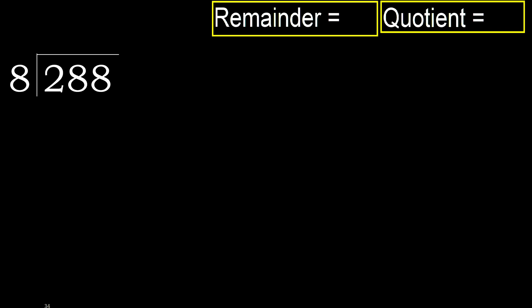288 divided by 8. 2 is less than 8, therefore move to the next digit. 28 is not less than 8, therefore we work with 28.